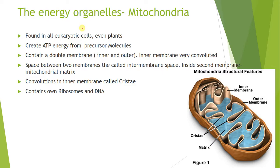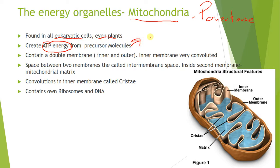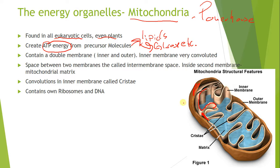Two important energy organelles not part of the endomembrane system are the mitochondria and the chloroplast. The mitochondria is the powerhouse — found in all eukaryotic cells, including plant cells — and it creates ATP from precursor molecules like lipids and glucose. An important feature is its double membrane: a thick outer membrane and a convoluted inner membrane, with an inner membrane space in between that helps create the potential to produce ATP.